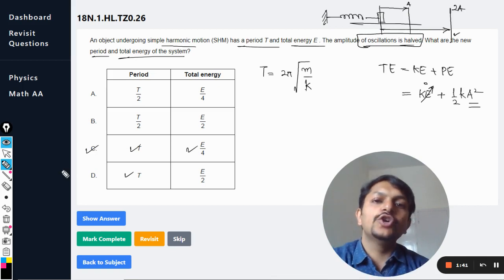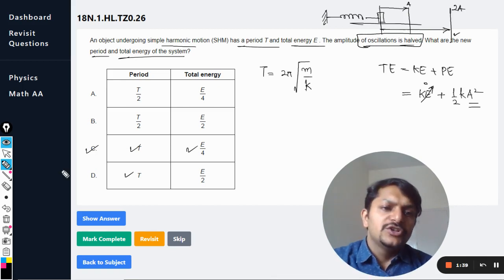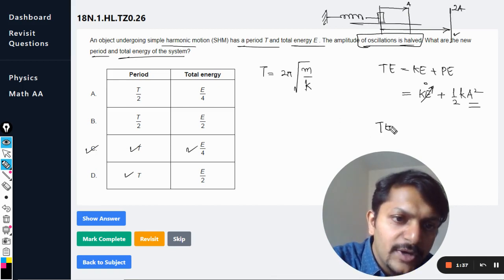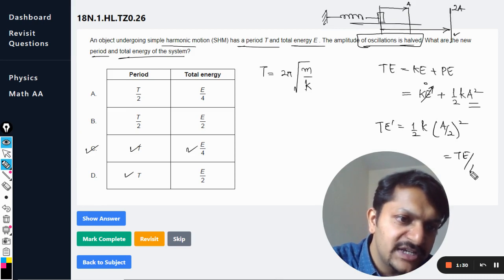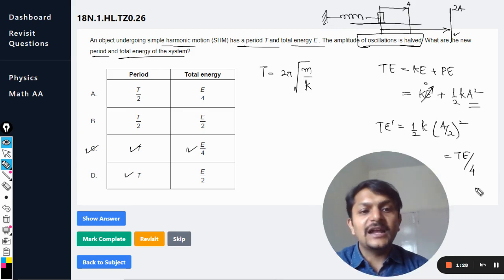If you ask how is it coming like that, it will be (1/2)k and a is (a/2)², which becomes E divided by 4. So that is what is happening with the total energy.